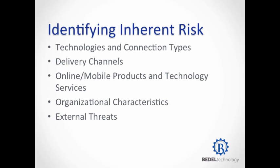The inherent risk is broken down into five different categories, grouped by how they affect the cybersecurity of the bank. The grouping doesn't affect your overall risk - each item is weighed equally to the others. Those items are rated on a scale of: least, minimal, moderate, significant, and most. From that risk, we use a table that the FFIEC has provided to give us our target maturity level that would be commensurate with that risk. Once we have that inherent risk, we need to determine our current maturity level.